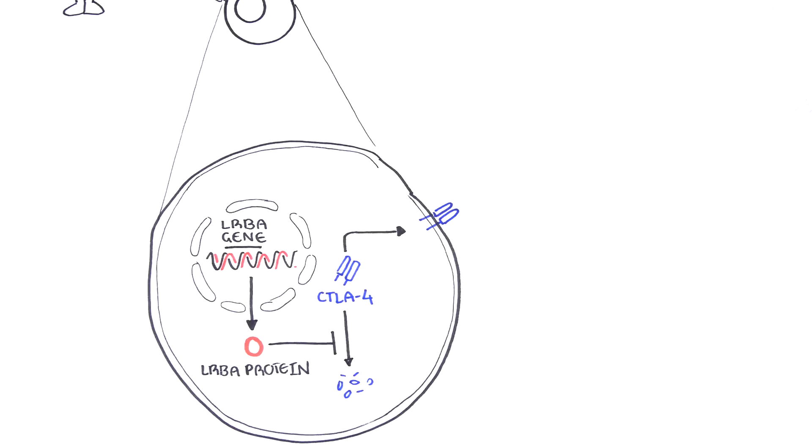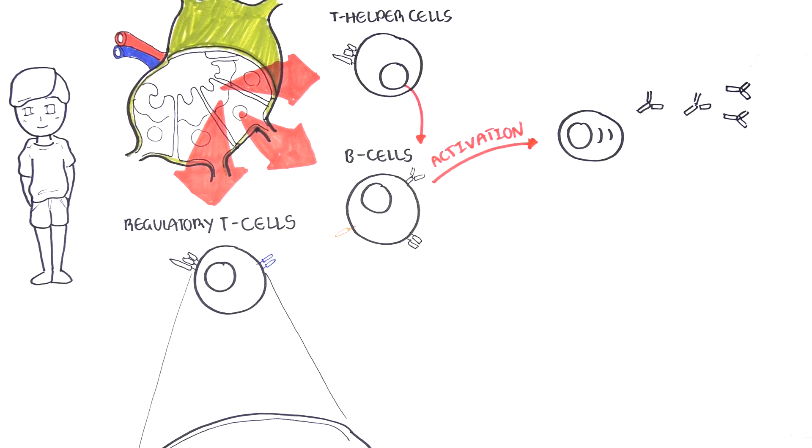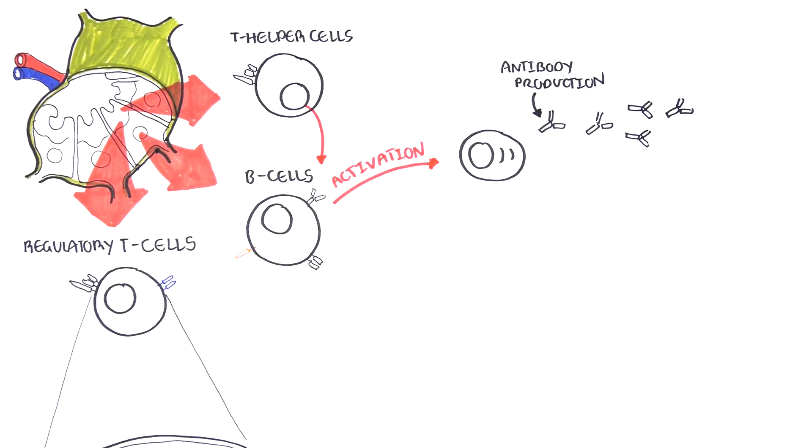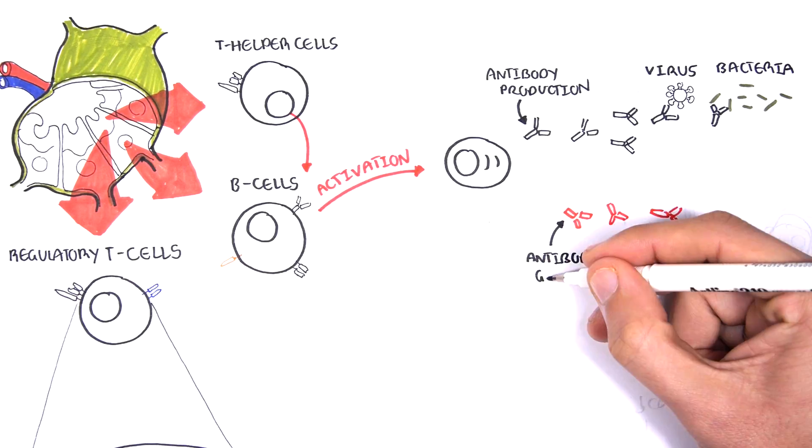To explain why this is important, we need to introduce the B cell to the story. Remember, B cells produce antibodies which neutralize invaders like viruses and bacteria. Sometimes they are programmed to produce antibodies against the body's own cells.